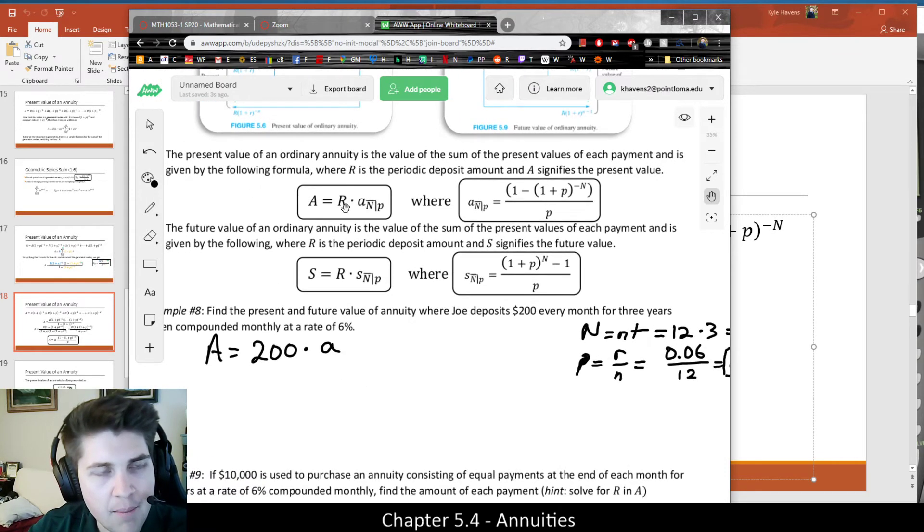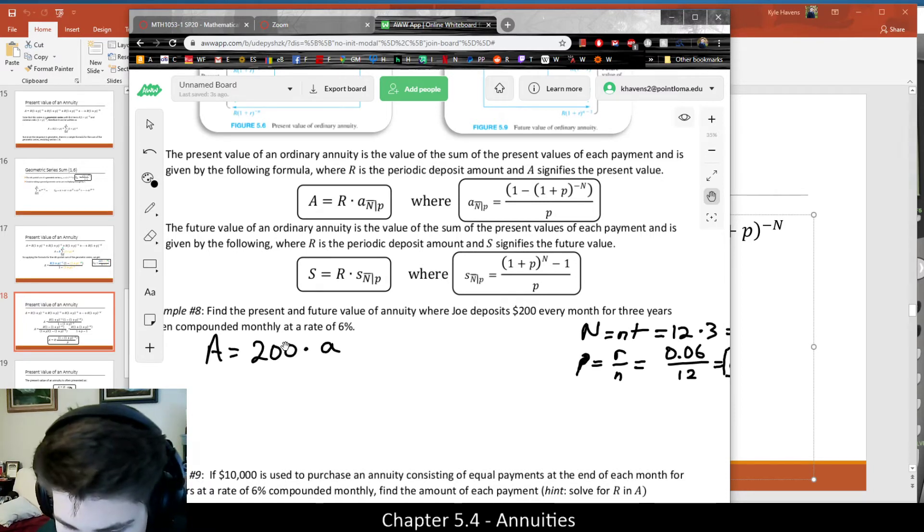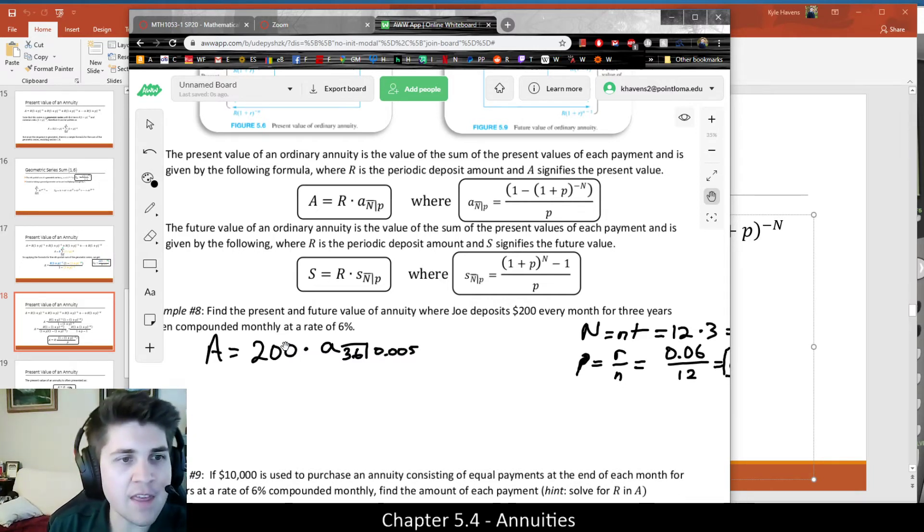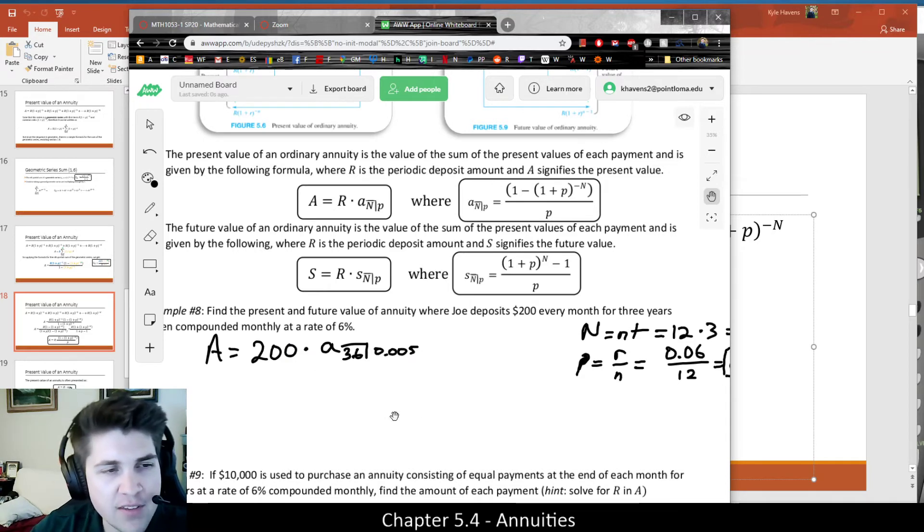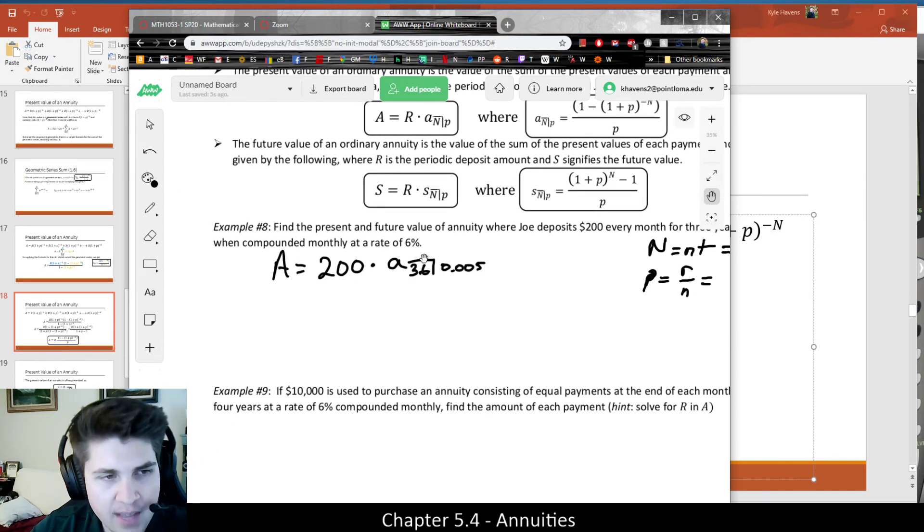So circling back, basically, the present value of the annuity is going to be R times this A, and now we know n is 36, and p is 0.005. In the world of math and finance before calculators, all of this notation was a little more important, because what we could then do is look up this value within a table, and all of those values would be pre-calculated as a reference point.